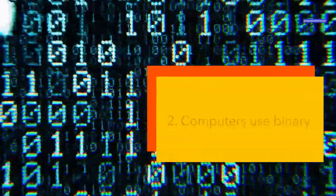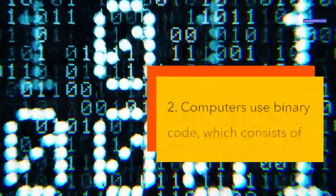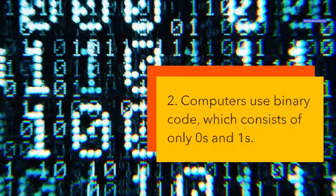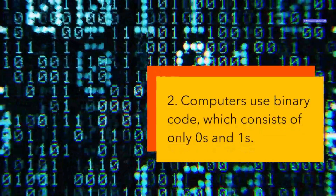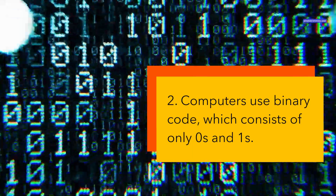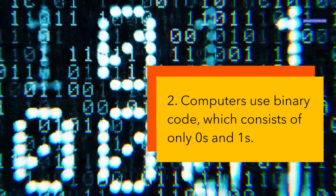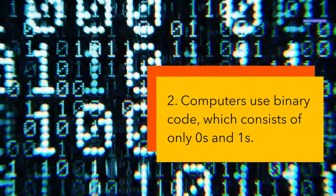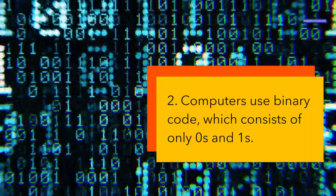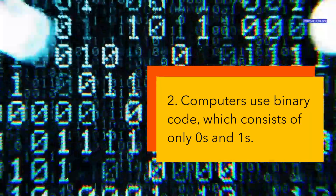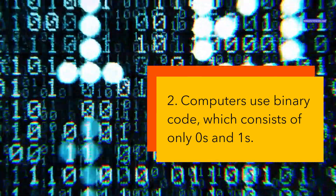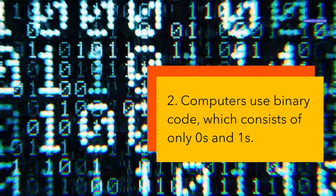Computers use binary code, which consists of only zeros and ones. Binary code is the language that computers use to communicate and process information. Each zero or one is called a bit, and a group of eight bits is called a byte. Binary code can represent numbers, letters, symbols, and instructions for the computer.